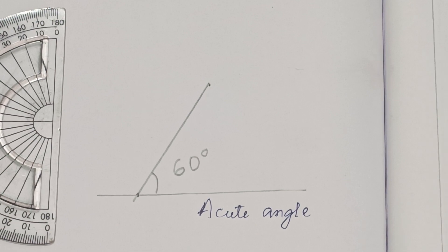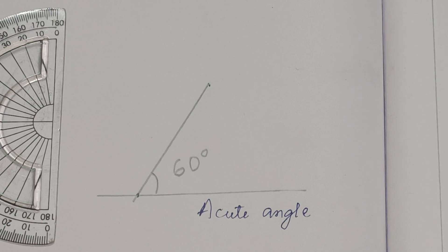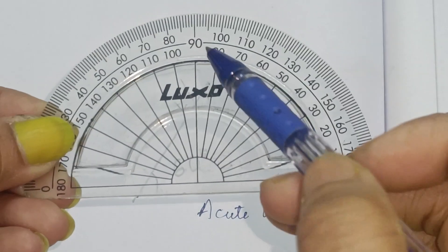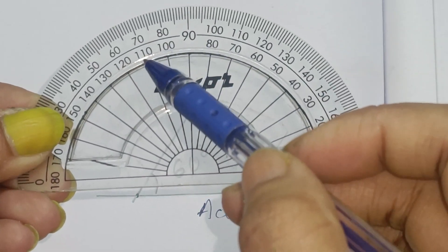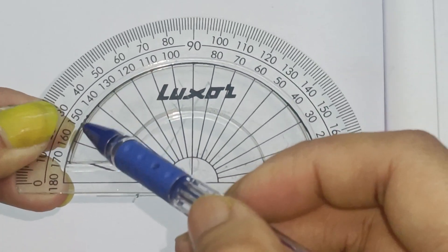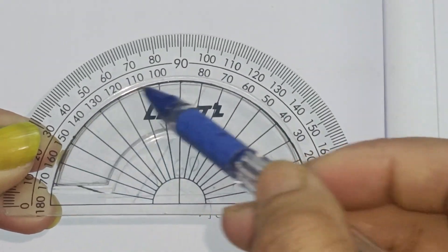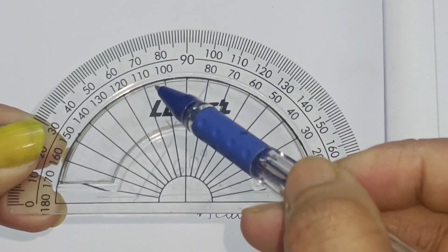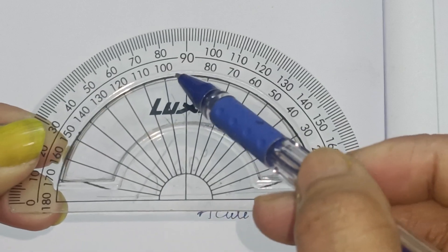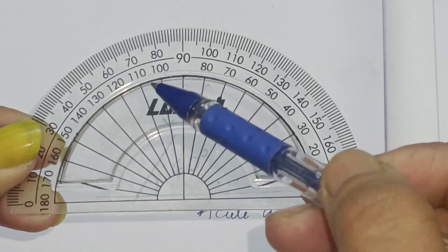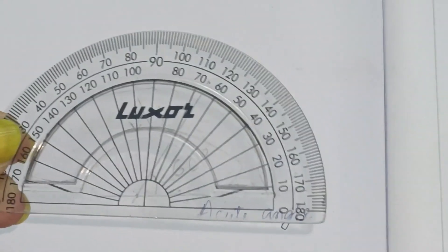Now let's measure an obtuse angle. An obtuse angle is an angle more than 90 degrees — see here: 100, 110, 120, 130, 140, 150, 160, 170, 180. All angles greater than 90 degrees are called obtuse angles. So if you measure an angle more than 90 degrees, we call that angle an obtuse angle.